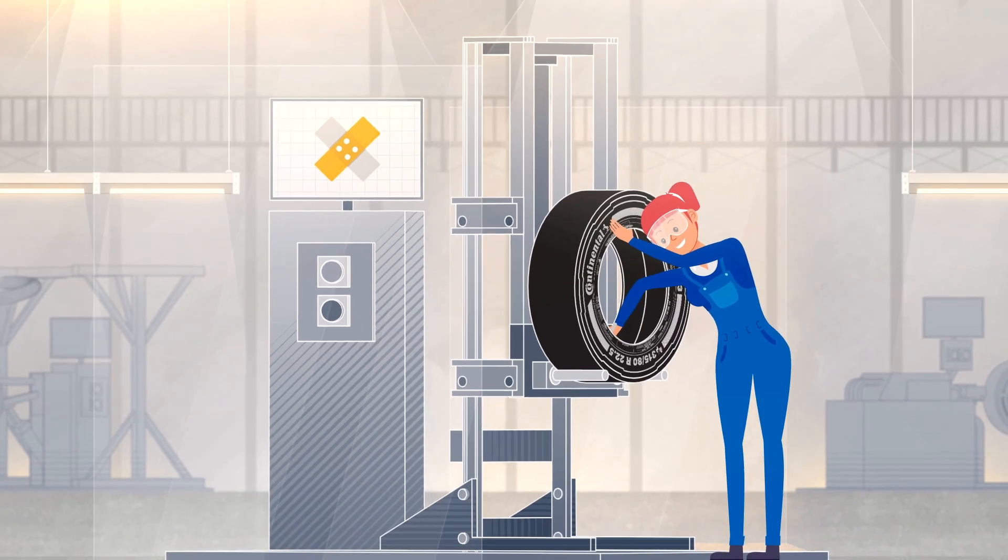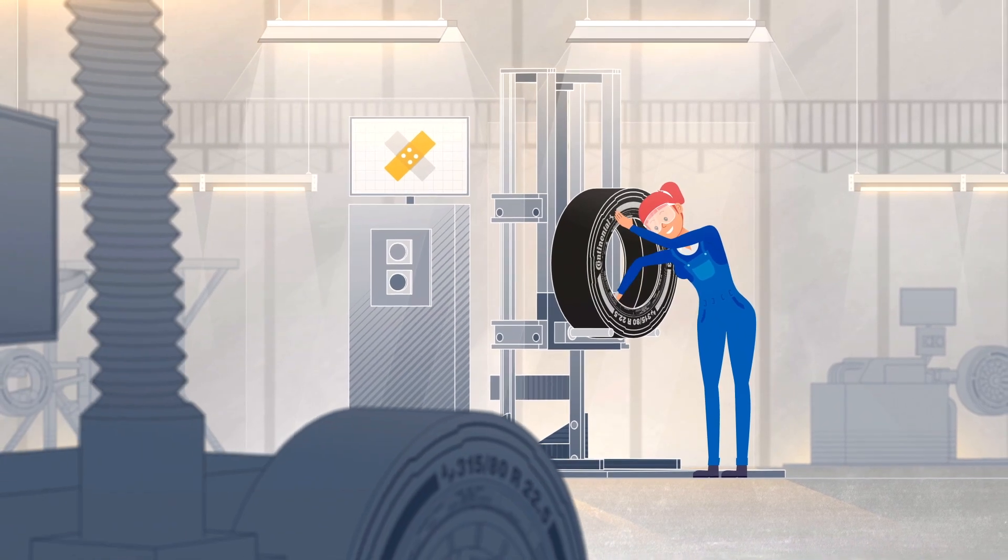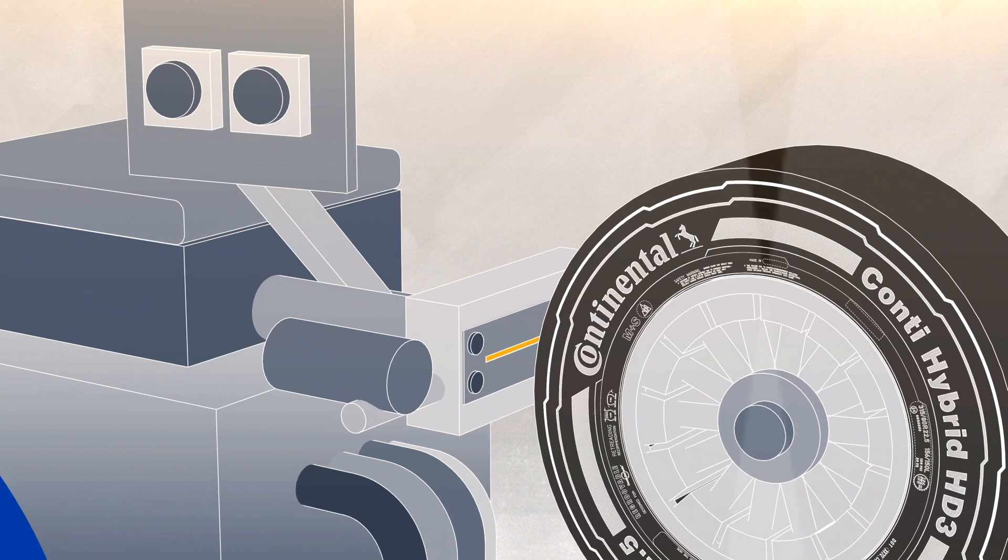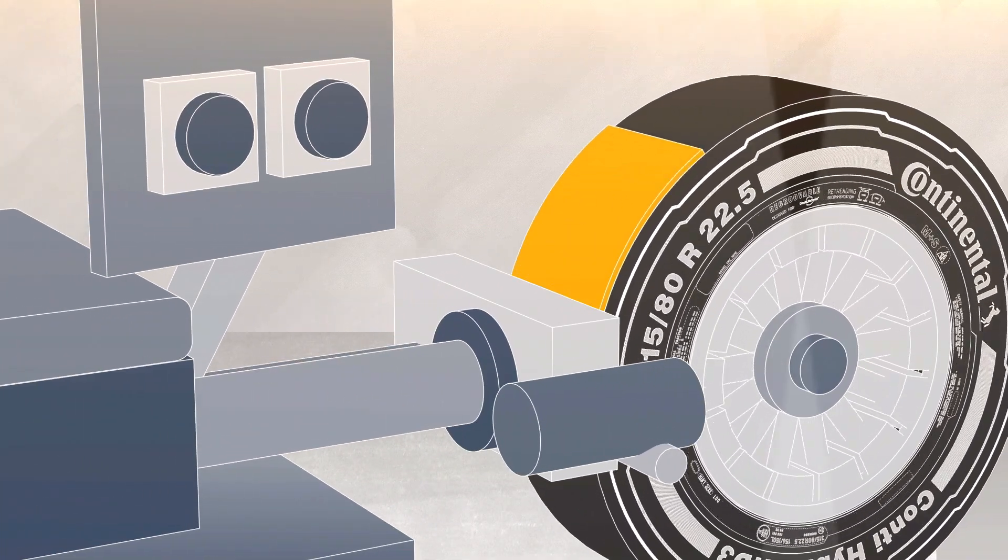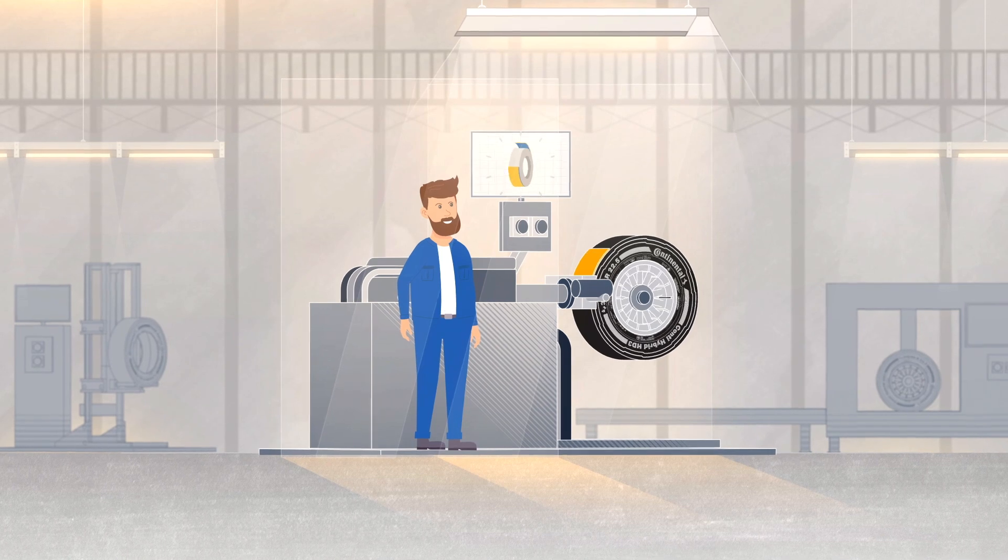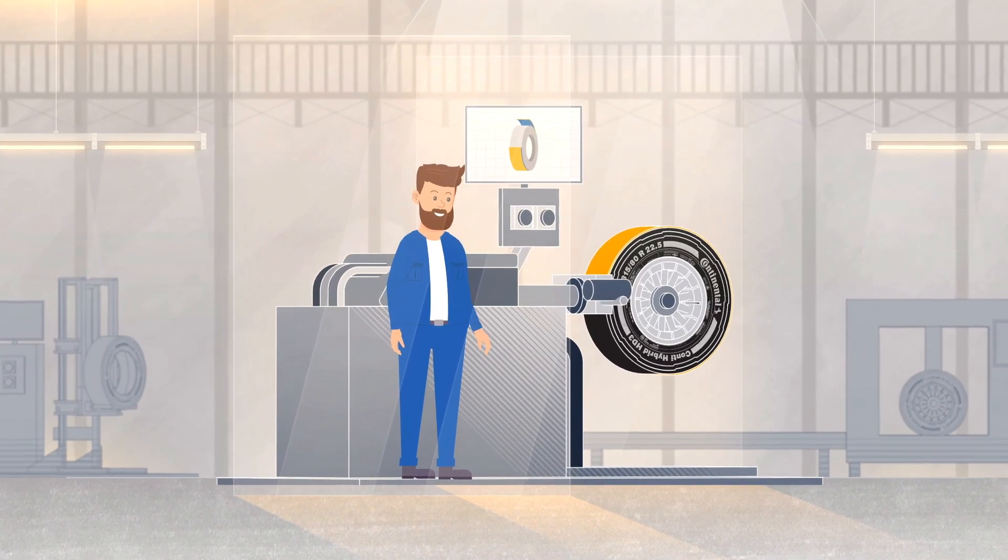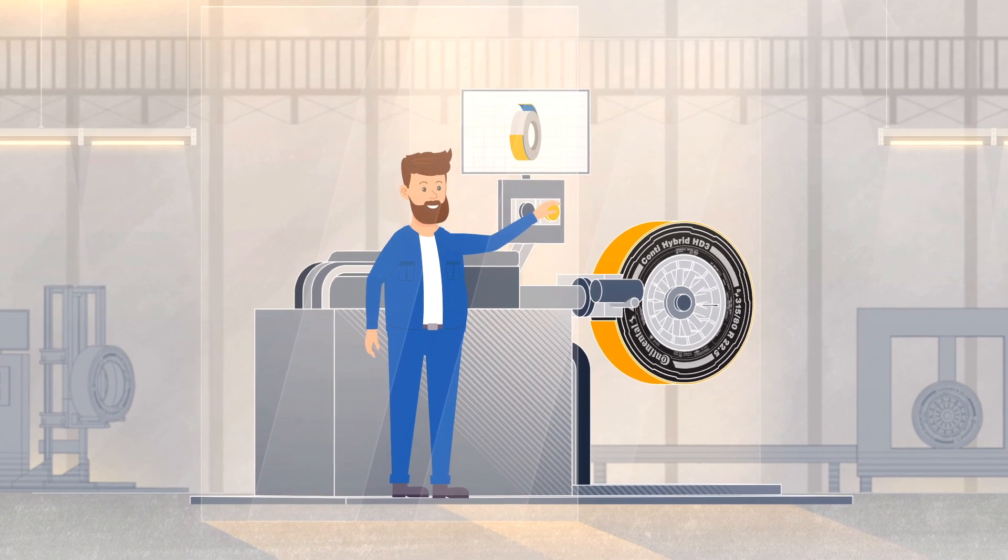Minor damage to the crown of the casing is repaired. A thin layer of Conti cushion gum is applied to attach the new tread to the casing. The excellent adhesive properties ensure that the tread bonds inseparably with the casing during vulcanization.